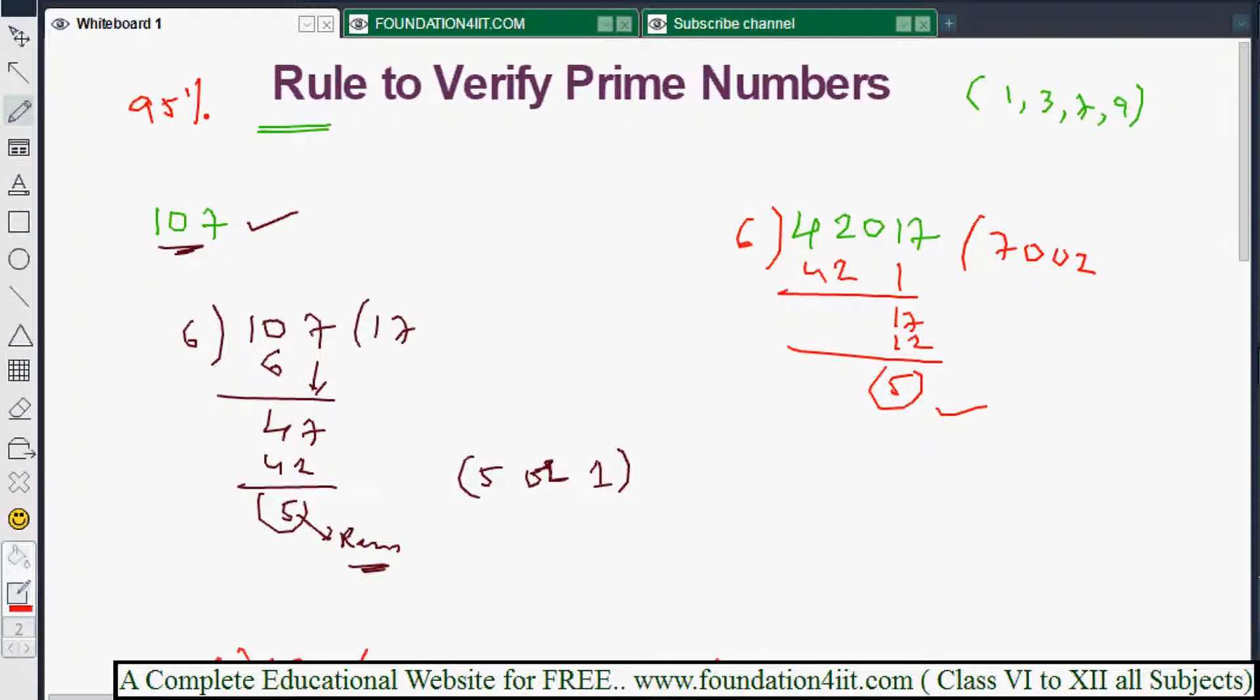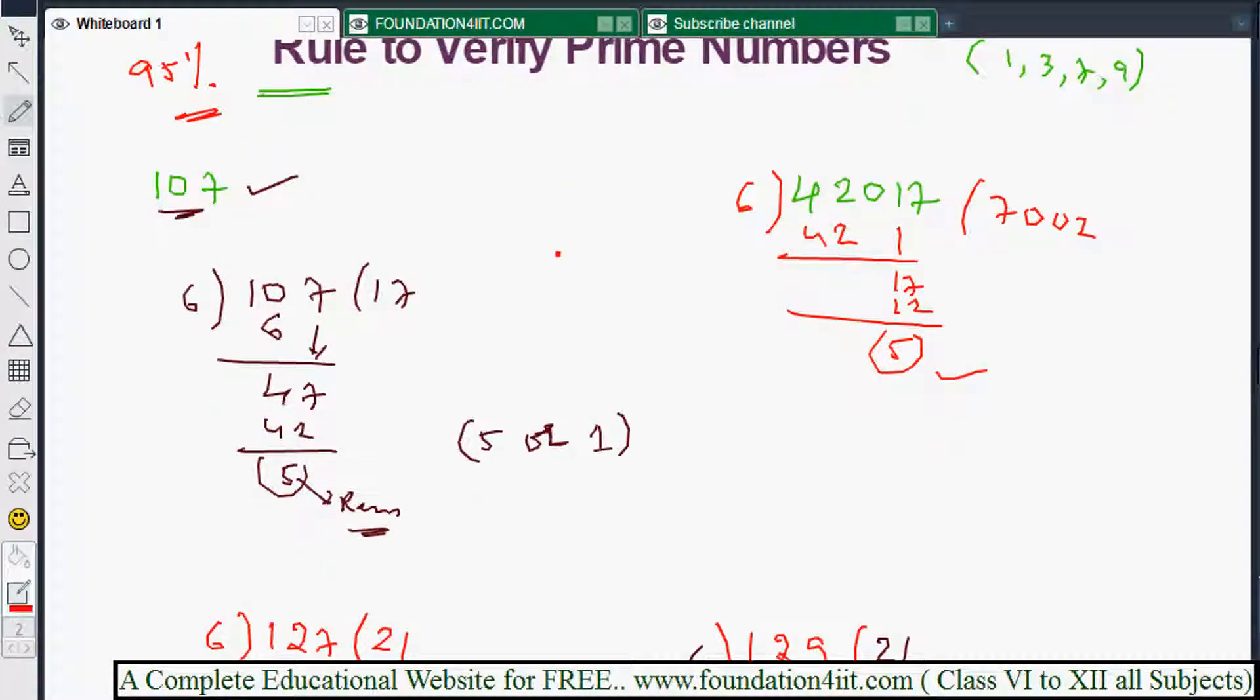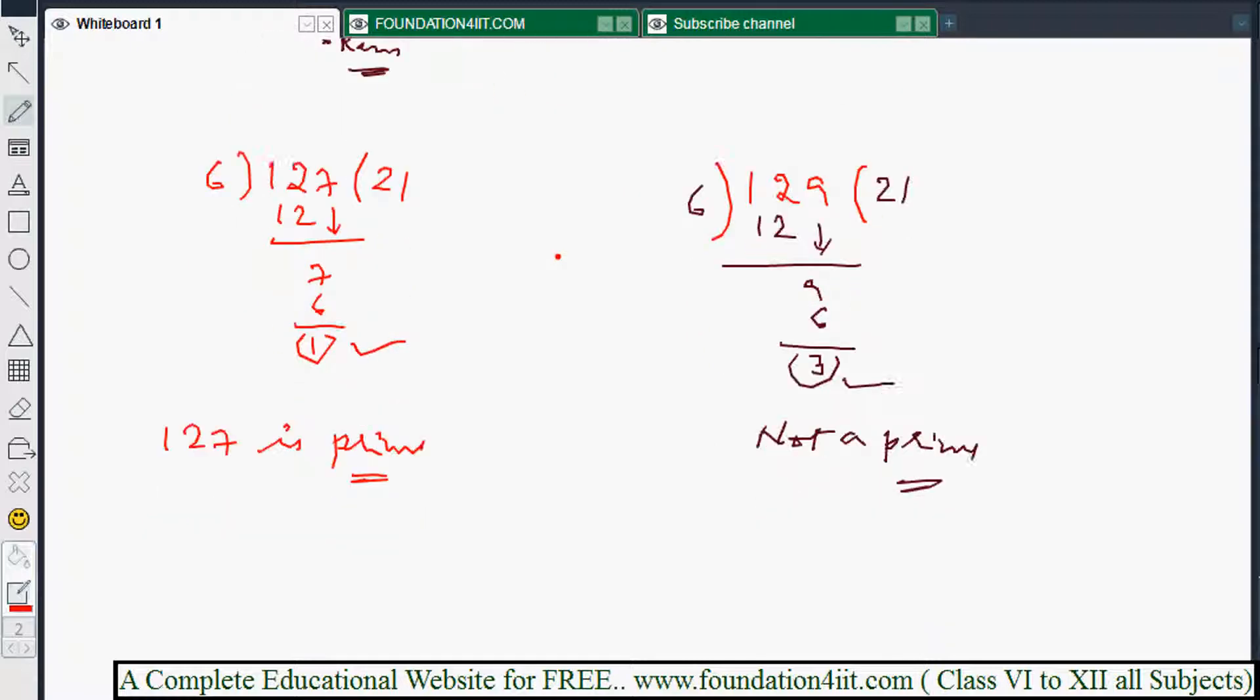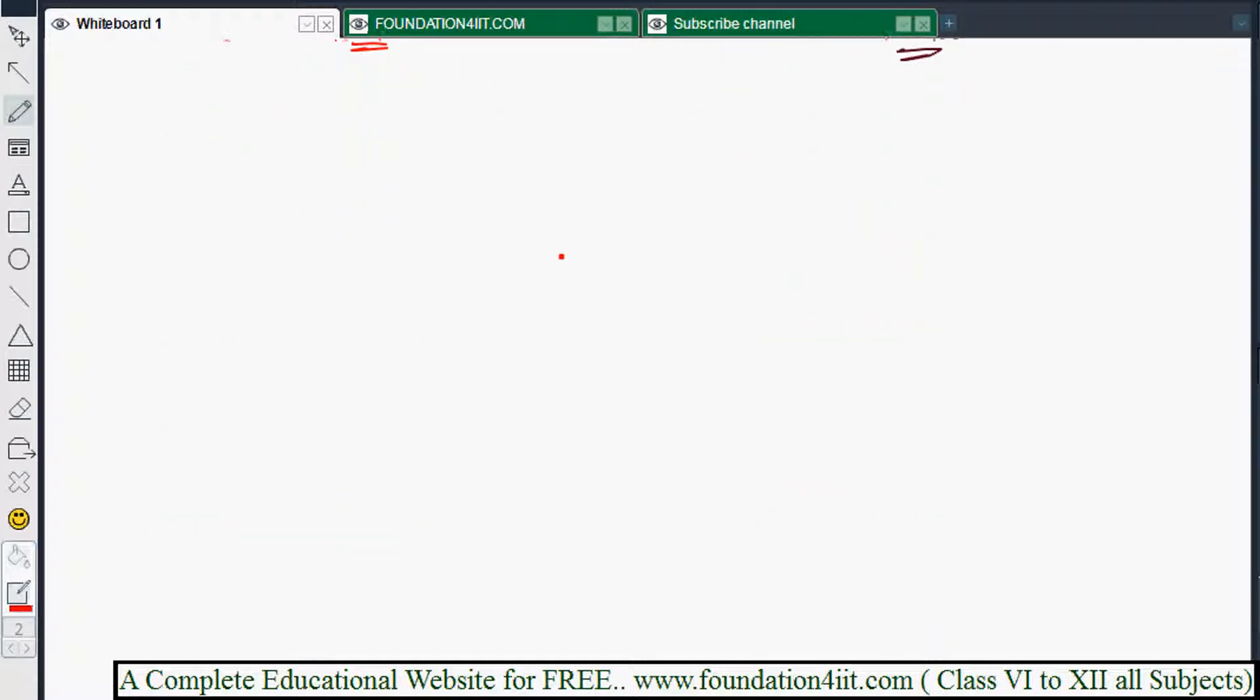But in some cases, this rule only works for 95 percent. 5 percent there is a failure in this rule also. At what situations and what conditions this rule will fail, I will explain in the next video. This dividing by 6 and getting remainder 1 or 5 works for 95 percent of numbers.